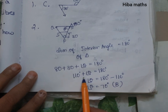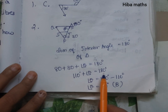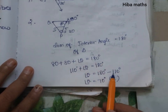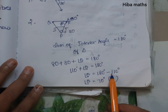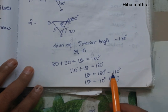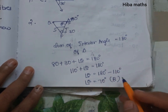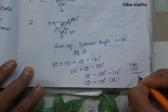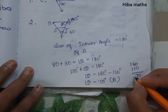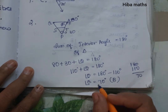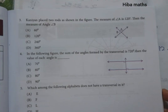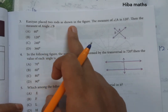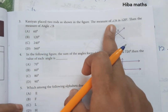So 110 plus Q degrees is equal to 180 degrees. Moving 110 to the other side as minus: Q is equal to 180 minus 110, which is 70 degrees. So the answer is 70 degrees, which is option B.